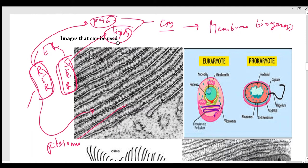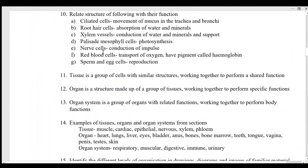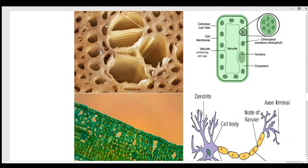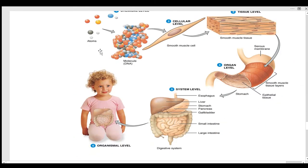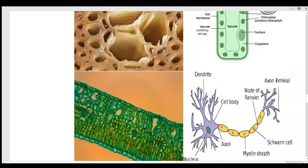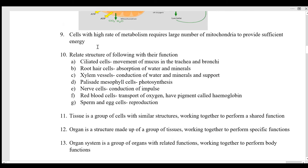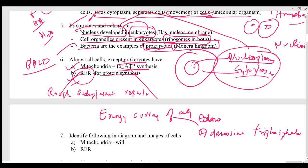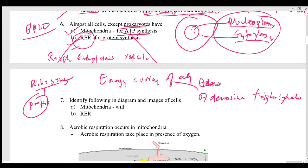The rough endoplasmic reticulum has ribosomes on it, and these ribosomes make protein inside the cell. That is why ribosomes are generally called the protein factory of the cell.